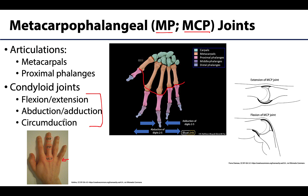Abduction and adduction in the hand is not the typical definition of moving towards or away from the body. Instead, abduction in the hand is moving away from the third digit, whereas adduction is moving towards the third digit — so it's all focused on this third digit. The first digit MP joint is typically described as a condyloid joint like the rest, but it's mainly just capable of flexion and extension.